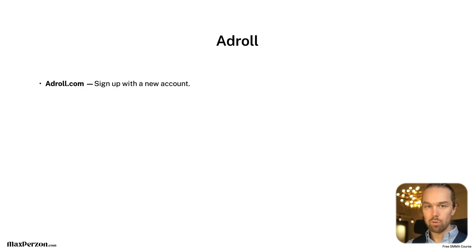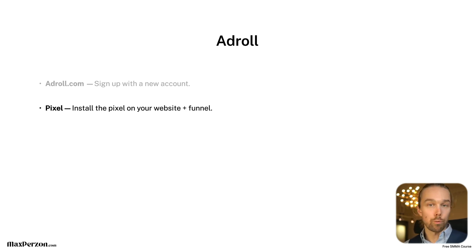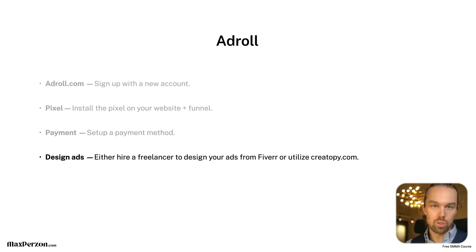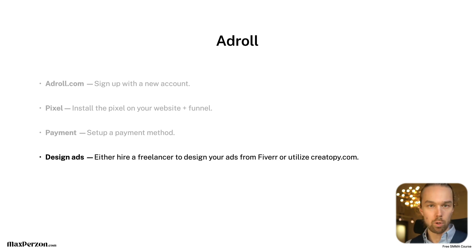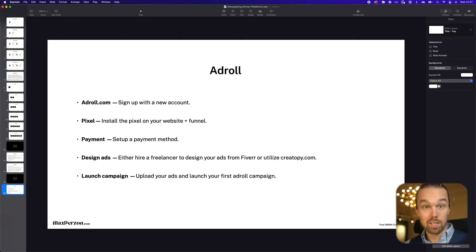With AdRoll it's very simple: you go to the website, sign up for a new account, install the pixel on your main website and on your funnel as well. You also need to set up a payment method with AdRoll, and then design your actual ads — either by hiring a freelancer or using a design tool. Then you upload your ads into AdRoll, launch your campaign, and your AdRoll retargeting campaign is set up and ready to go.